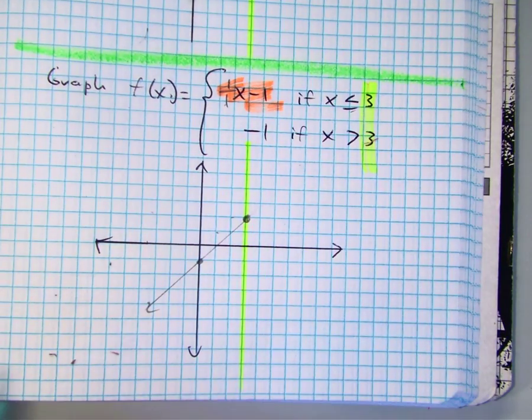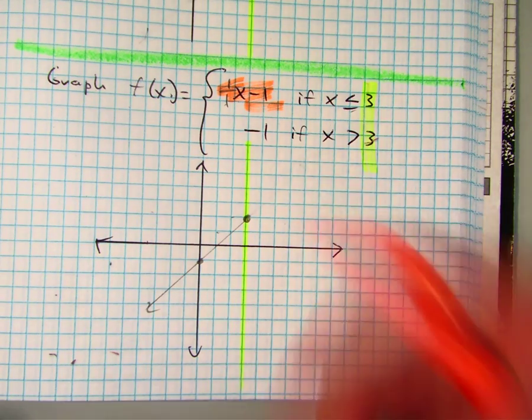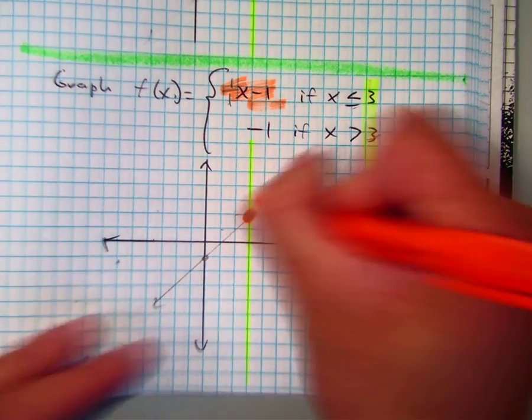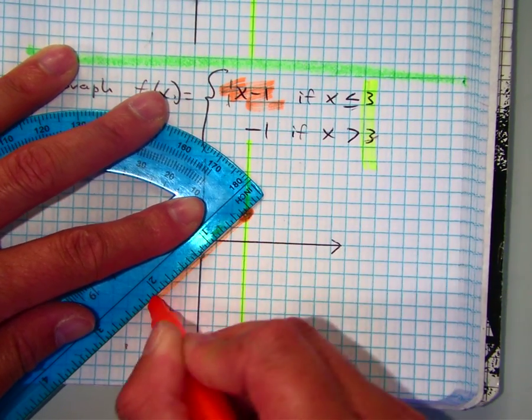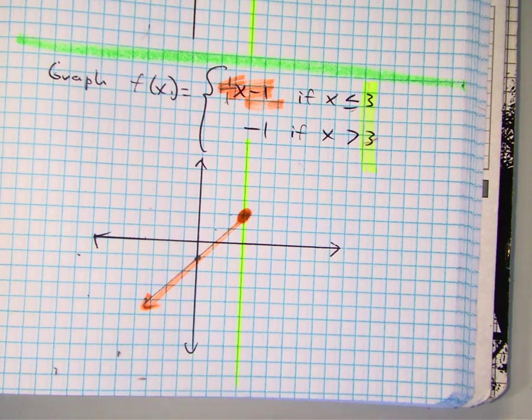x minus 1 if x is less than or equal to 3. So close circle. And you should have something like this. Raise your hand if you got that so far?